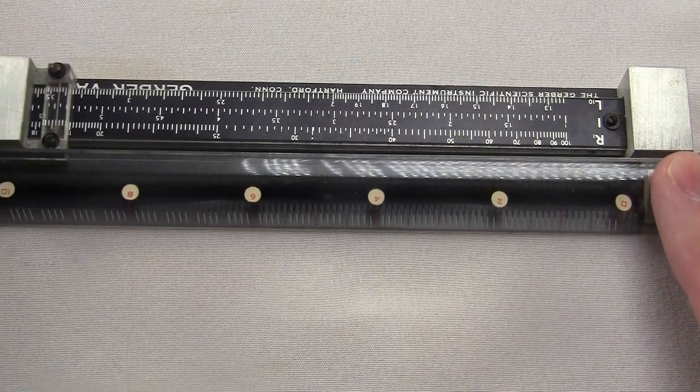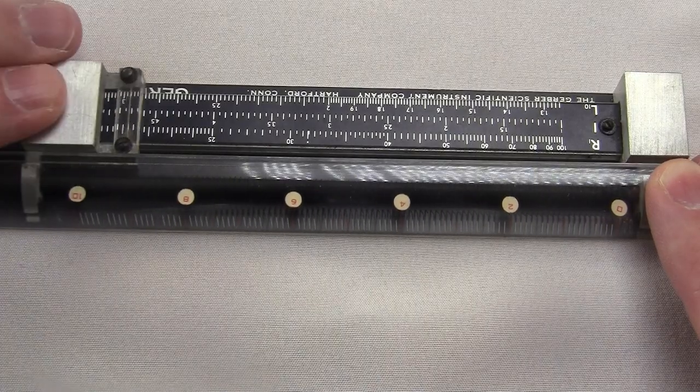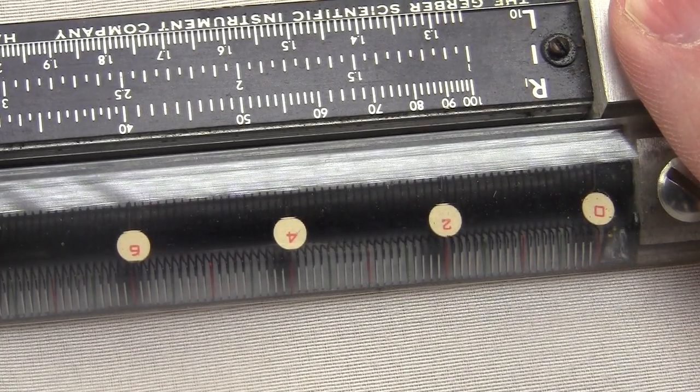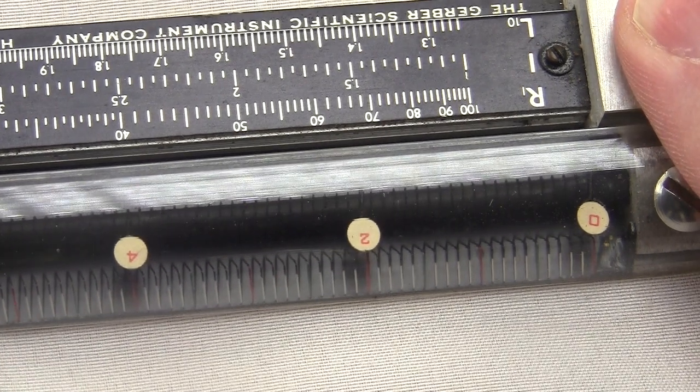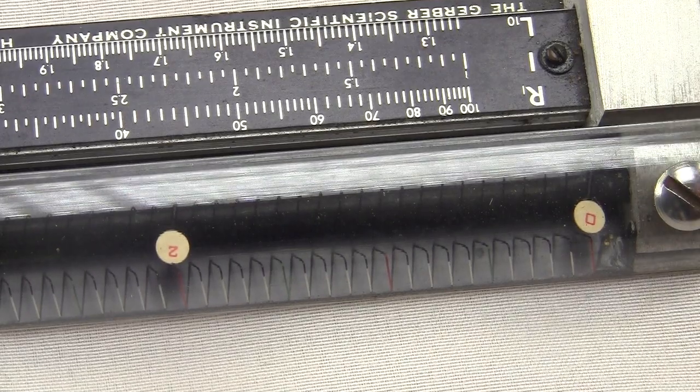Anyway, this is the real thing, the Gerber Variable Scale. The stretchable scale is marked 0 to 10 with red markings, the halves are blue markings, and the white ones are tenths. It's a bit hard to see, but what you're looking at is actually a spring with 100 coils.